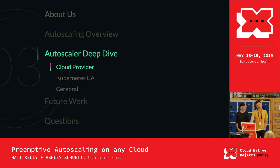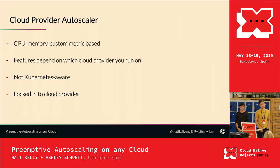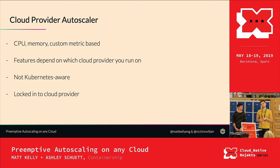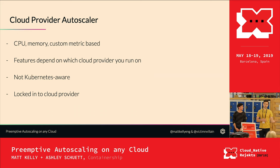Now let's talk about cluster autoscalers in particular. First up: cloud provider autoscalers. These are the autoscalers you'd get using AWS, Azure, Google, or similar providers. They're not Kubernetes-aware — they're purely CPU, memory, or in some cases custom metric based if the platform supports it. Features are highly dependent on which cloud provider you're on, so moving from Azure to Google or AWS, you might lose or gain autoscaling features. You're basically locked into your cloud provider.